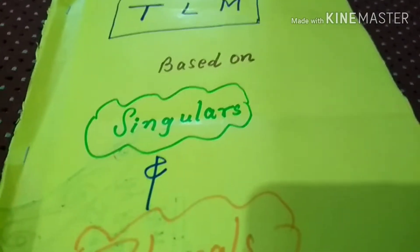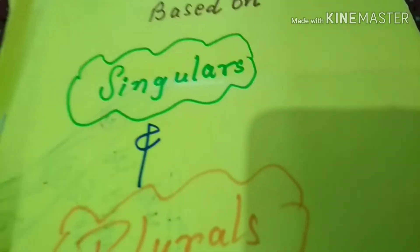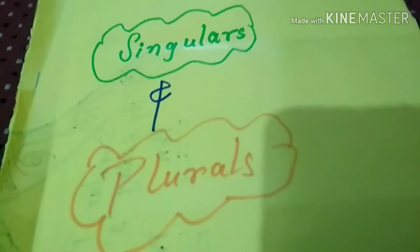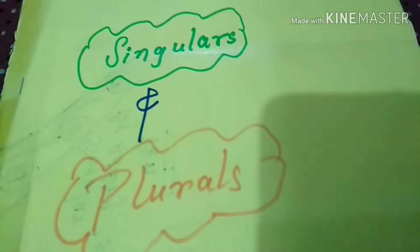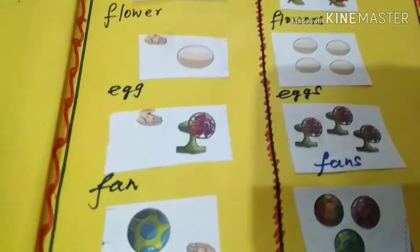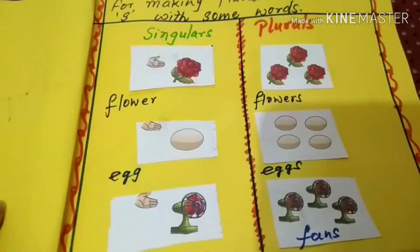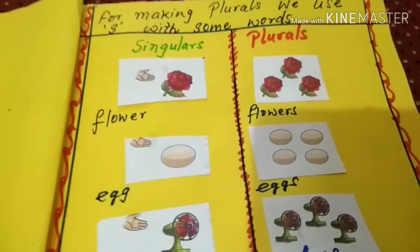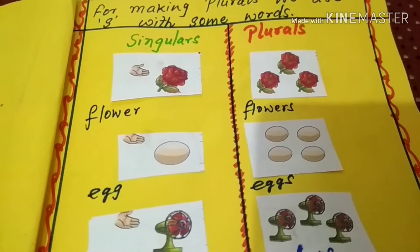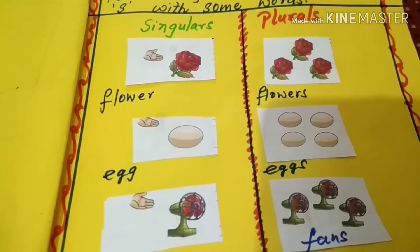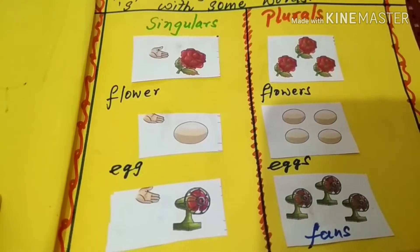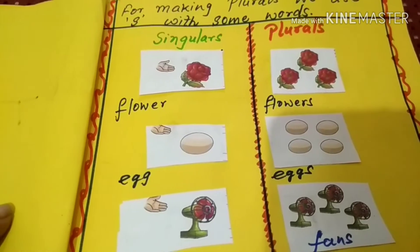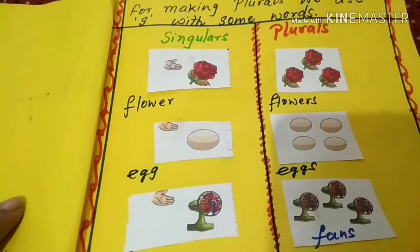Hello, this TLM is based on how words change from singular to plural. First, you should know singular refers to one person, one thing, and plural refers to many persons, many things. There are some rules for changing singular into plural.